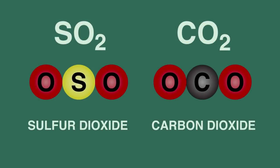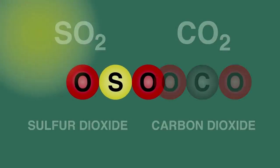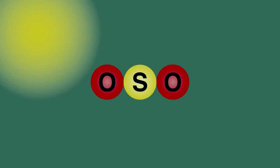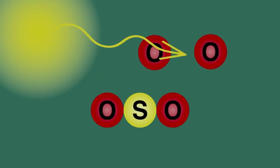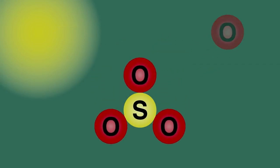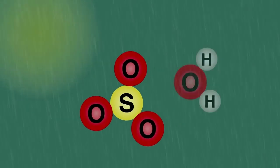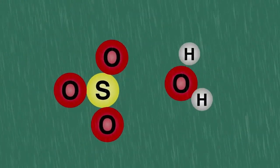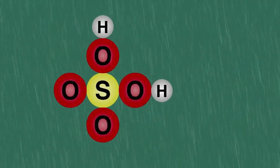In the presence of sunlight, a photochemical reaction will take place where sulfur dioxide reacts with more oxygen to form sulfur trioxide. This dissolves in the rainwater, forming sulfuric acid.